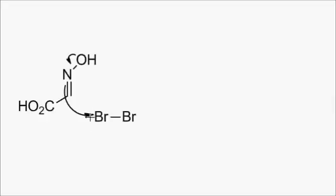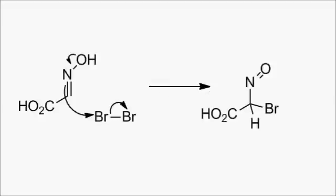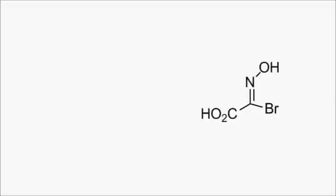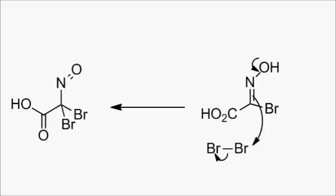Oxygen provides the electronic push for the molecule to react with bromine. After the first bromination, a proton is lost, and after the second bromination, a decarboxylation returns this nitroso-looking compound into an oxime.